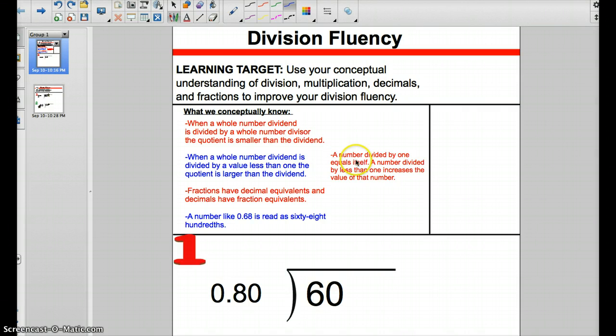For example, a number divided by 1 equals itself. 8 divided by 1 is 8. 10 divided by 1 is 10. But a number divided by less than 1 increases the value of that number. Take a look at this example.